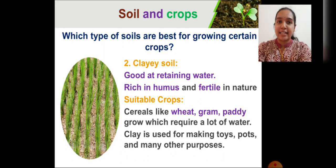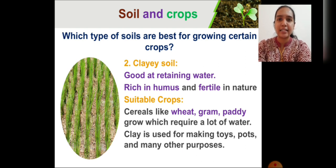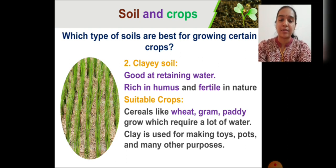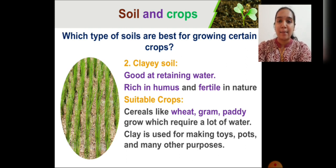Next is clay soil. Clay soils are good at water absorption, usually rich in humus, and therefore fertile — though slightly less fertile than loamy soils. The suitable crops that grow in clay soils are cereals like wheat, gram, and paddy. Clay soils are also useful not only for growing crops, but also for making toys, pots, etc.